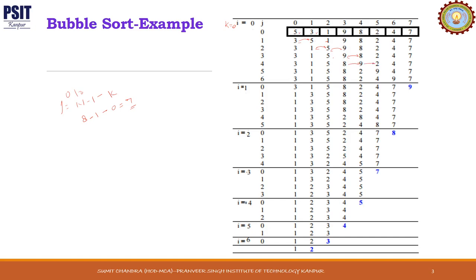When j is equal to 4, we are comparing the 4th element with the 5th element. Since 2 is smaller, it is swapped. When j is equal to 5, we compare the 5th element with the 6th element — 4 is smaller, it is swapped. When j is equal to 6, we compare the 6th and 7th elements — 7 is smaller, it is swapped. After completion of pass 1 when k is equal to 0, the maximum element, the largest element, got its proper place at the last index of the array.